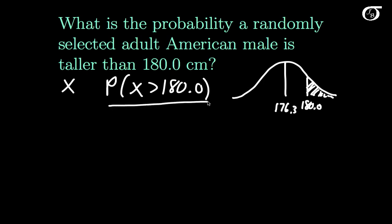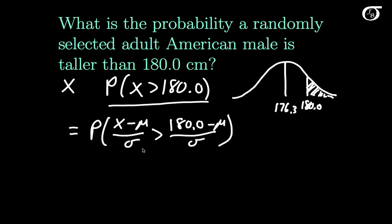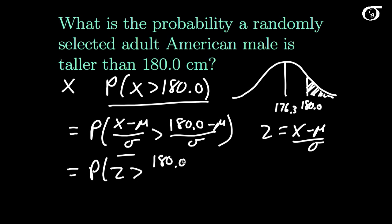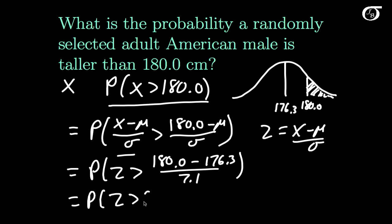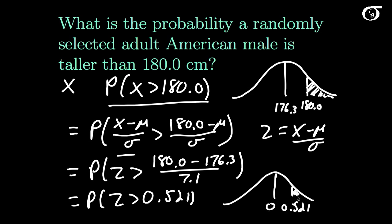That area gives us the probability that X is greater than 180. We can rewrite this as the probability of X minus mu over sigma being greater than 180.0 minus the mean, divided by sigma — we're allowed to do that since sigma is positive, so nothing flips. We know Z equals X minus mu over sigma, so this becomes the probability that Z is greater than (180.0 minus 176.3) divided by 7.1, which works out to the probability that Z is greater than 0.521. That is the area under the standard normal curve to the right of 0.521, which using a computer or standard normal table equals 0.301.